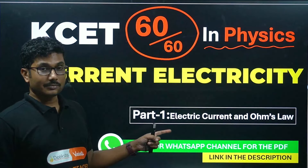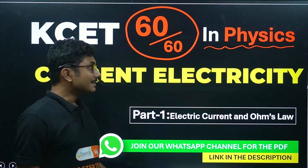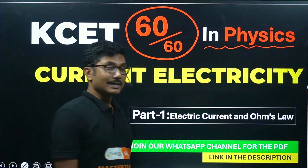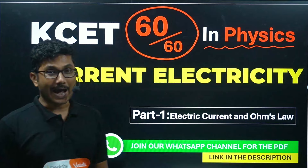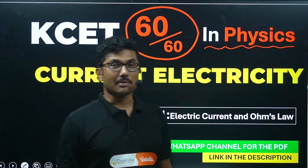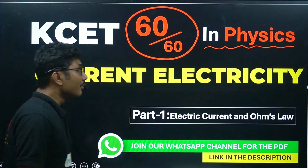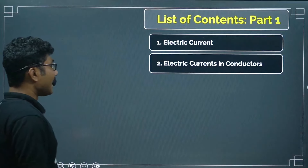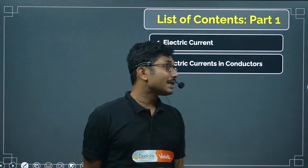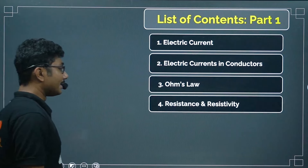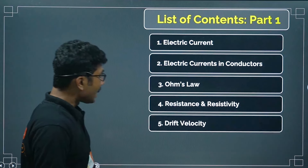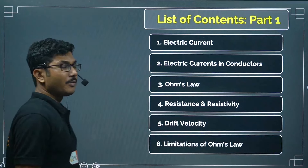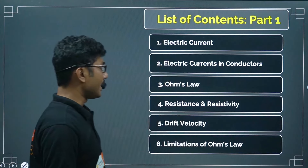Today we are starting the current electricity chapter, Part 1. We are going to discuss electric current and Ohm's law, and briefly cover drift velocity and drift current. The main topics are: electric current, electric current in conductors, Ohm's law, resistance and resistivity, drift velocity, and limitations of Ohm's law.